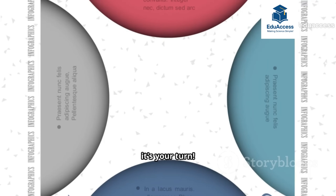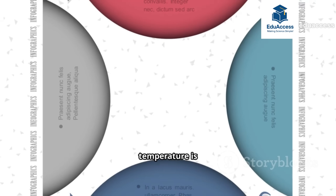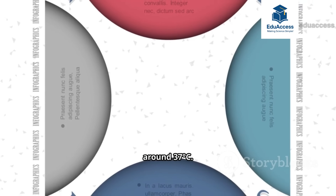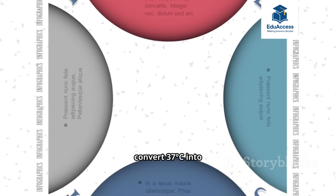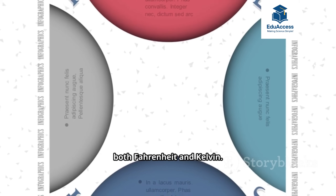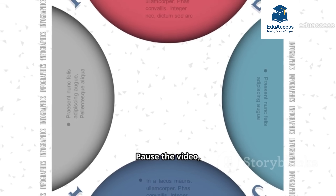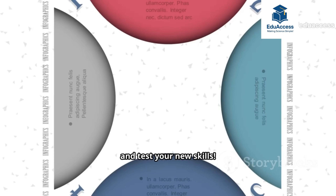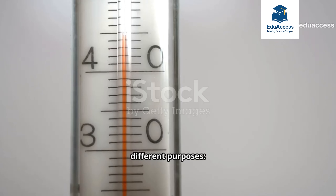Now it's your turn. Normal human body temperature is around 37°C. Your challenge: convert 37°C into both Fahrenheit and Kelvin. Pause the video, work out the answers, and test your new skills.